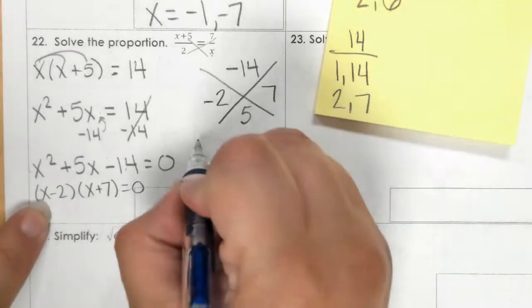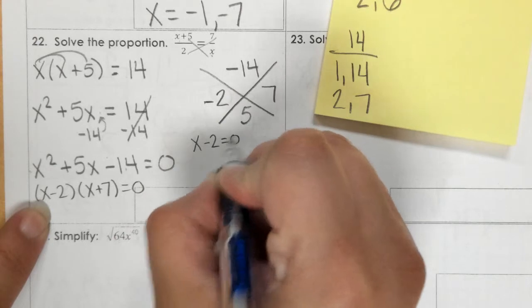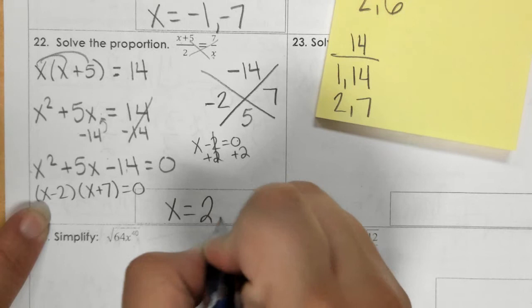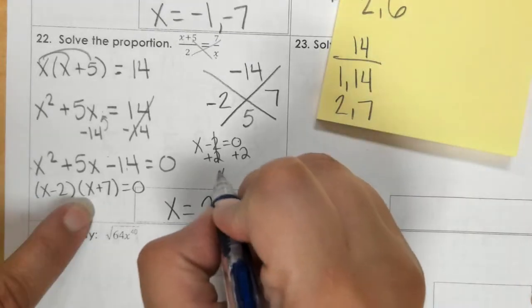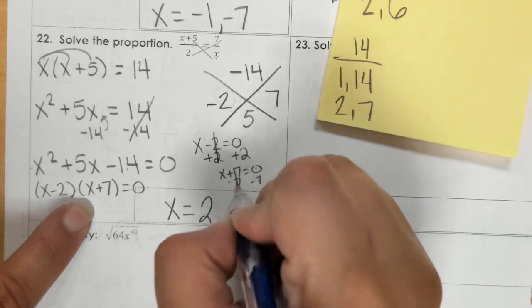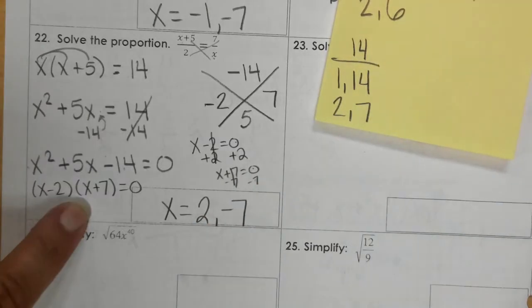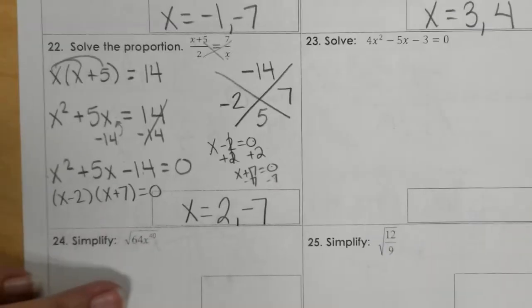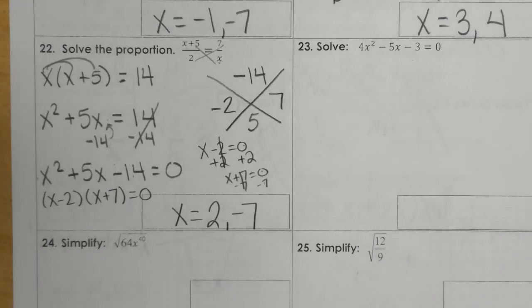So x minus 2 equals 0 means I'm adding 2. 0 plus 2 is 2. Here, I have x plus 7 equals 0. If I subtract 7, 0 minus 7 is negative 7. And that is my solution to number 22.